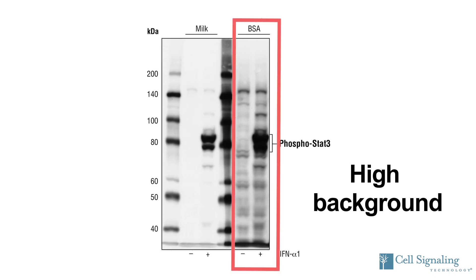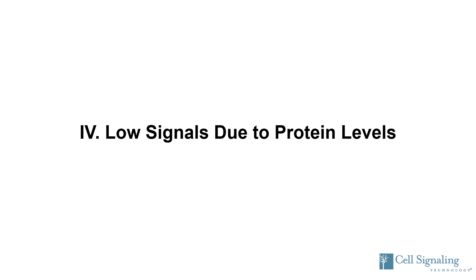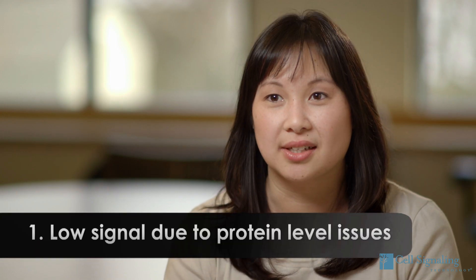Poor Western blot results can be generally classified as either low signal or high background. The signal is considered low for most targets if the protein of interest cannot be detected after 30-second exposure of the blot to film. High background is defined as having a generally dark background or nonspecific bands appearing after 30-second exposure of the blot to film.